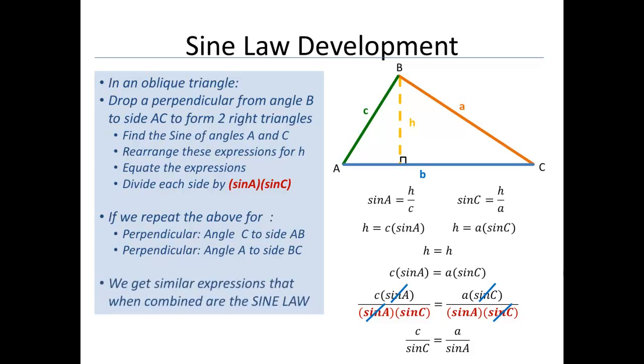So what we will see in the result of all this is that our sine law comes out to be A over sine A is B over sine B is C over sine C.